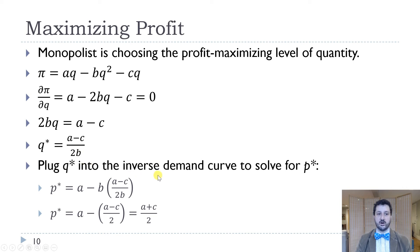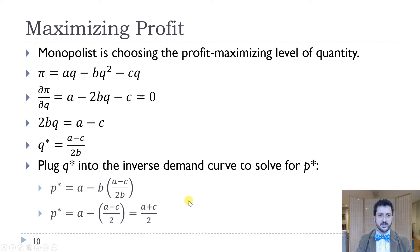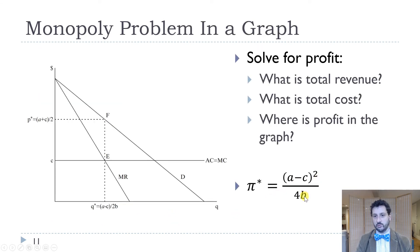That's our profit-maximizing quantity. To get our price, we plug Q star back into the inverse demand curve: P star equals A minus B times (A minus C over 2B). The Bs cancel out, and we get A minus (A minus C) over 2. That simplifies to A over 2 plus C over 2, so P star equals (A plus C) over 2. We can also calculate profit as quantity times (price minus cost), which gives us (A minus C) squared over 4B, since we have 2 times 2B in the denominator.